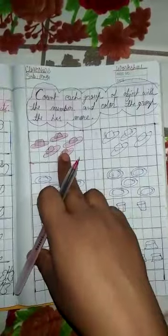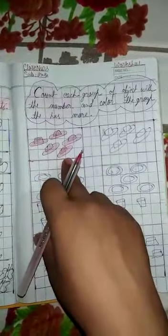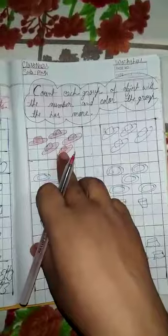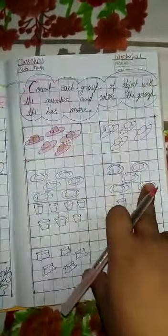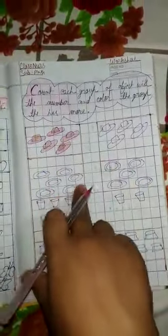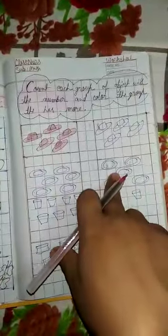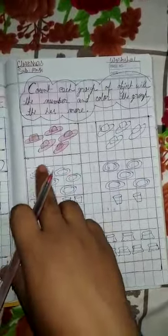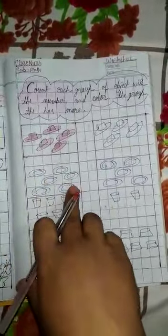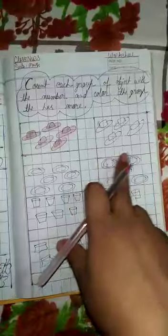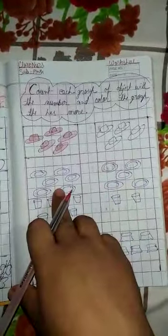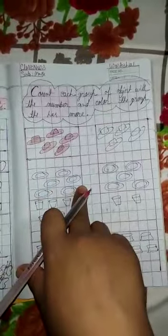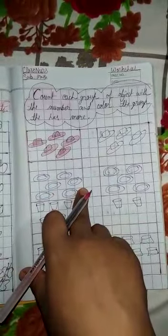Next line, count this first. This group of objects and this group of objects, whichever has more, color that group of objects, okay? So first count: one, two, three, four, five, six. Six here. One, two, three, four, five. Five here. Six is more, right? So the group of six, you color that, okay?